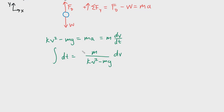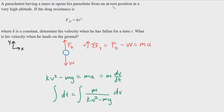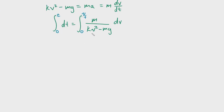We can take the integral of that. To define our limits of integration, the parachutist starts from rest, so the initial velocity is 0 and the final velocity is VF. We start the time right when the parachutist starts falling, so the initial time is 0 and the total time traveled is some value T, lowercase T. We'll use the same notation.